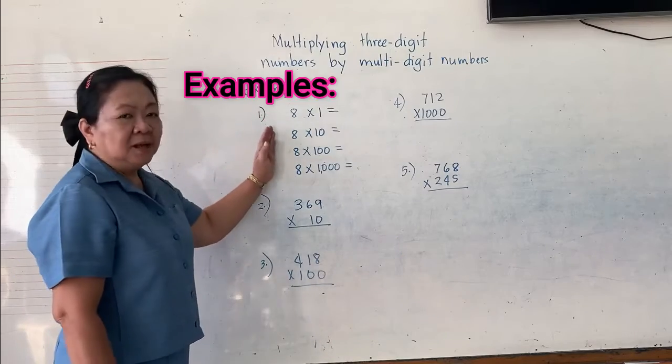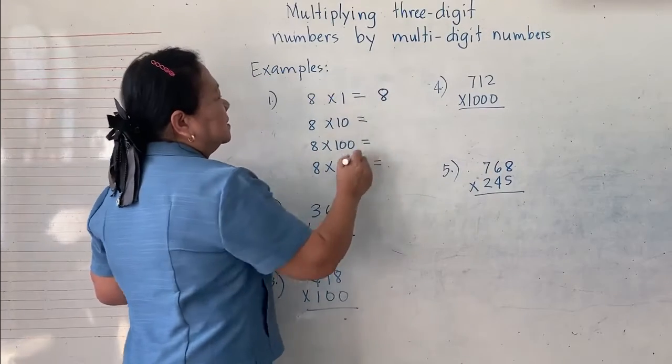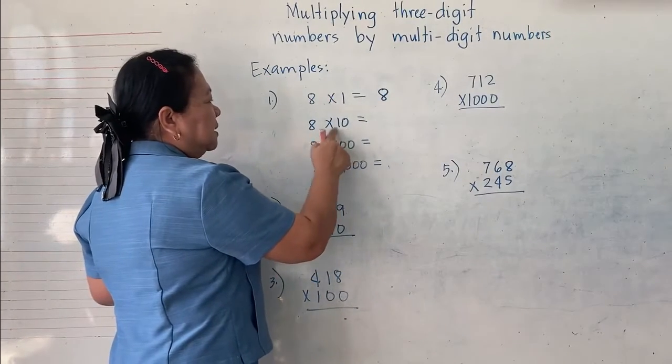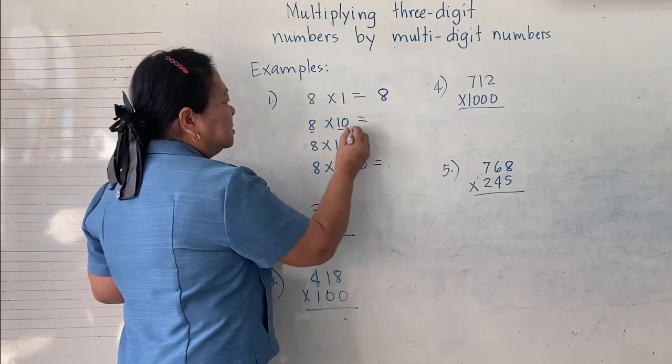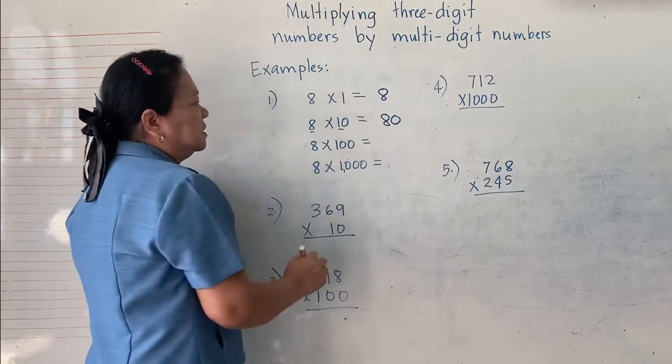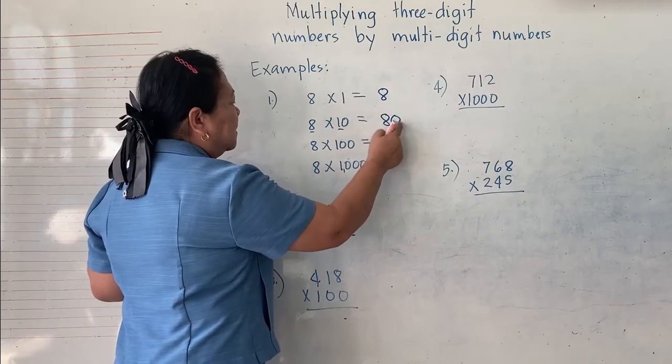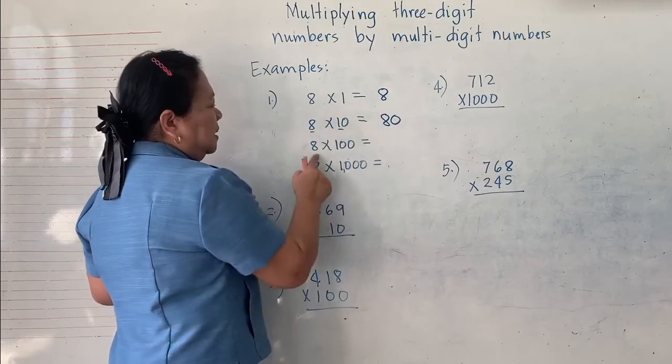So, here are some examples. 8 times 1, of course, is equal to 8. 8 times 10. So, at first, 8 times 1 is 8 and has one 0. That's 0. 8 times 0 is 0. 8 times 1 is 8.